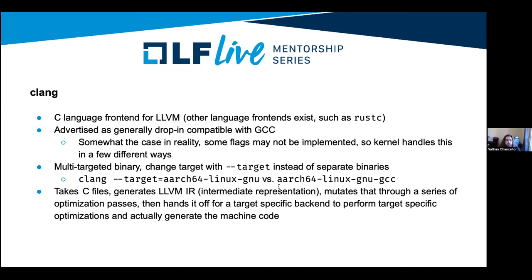Clang is the C language frontend for LLVM. Other language frontends exist, such as Rust-C — the Rust compiler by default uses LLVM as a backend, showing the power that the same backend can be used for multiple languages. Clang is generally advertised as a drop-in replacement for GCC and is supposed to be compatible. In reality, this is kind of the case — there are some flags that might not be implemented or may be implemented in different ways, and the kernel handles this in a couple of different ways.